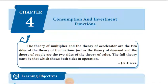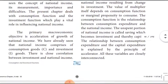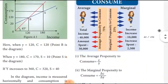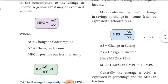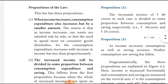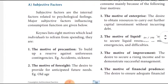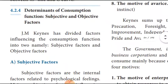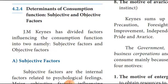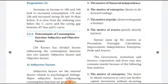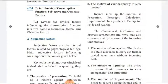Dear students, in 12th Standard Economics, 4th Chapter, we will talk about consumption and investment functions. This video covers John Maynard Keynes' Determinants of the Consumption Function. According to Keynes, there are two types of factors: subjective factors and objective factors. There are 8 subjective motives we will talk about.